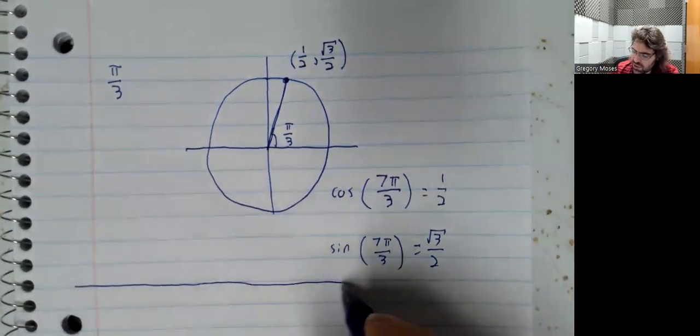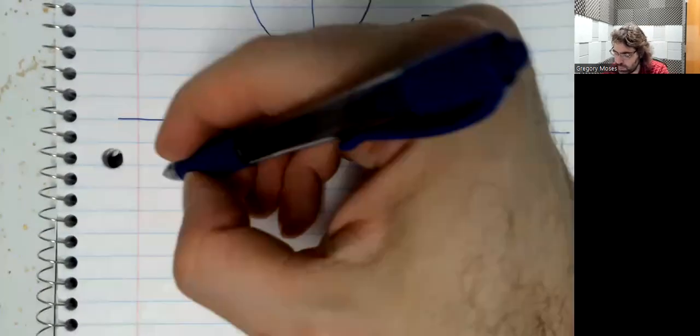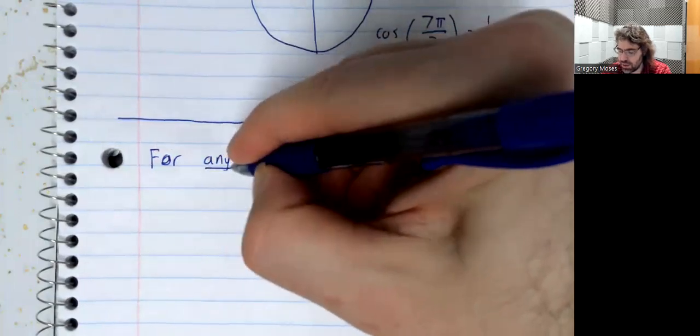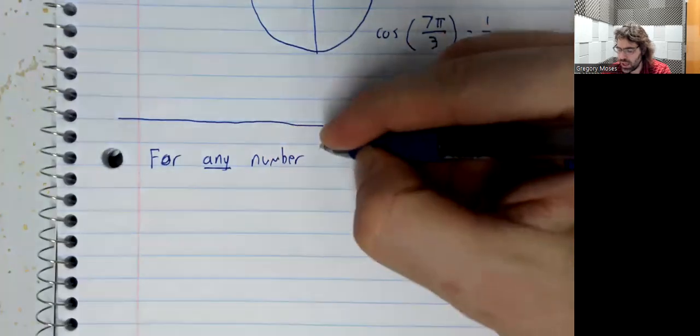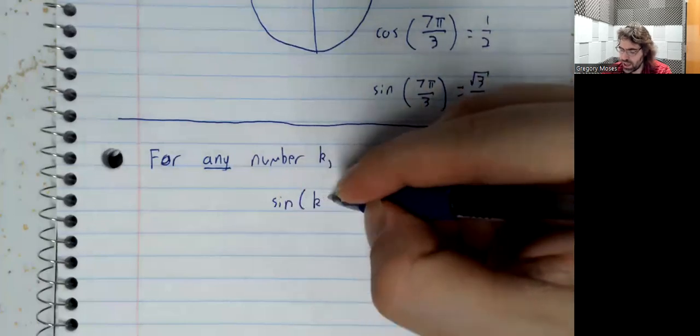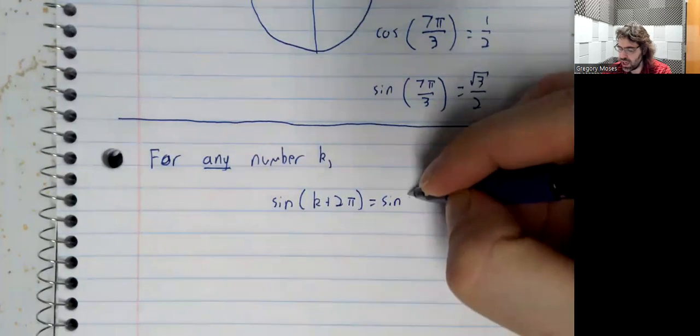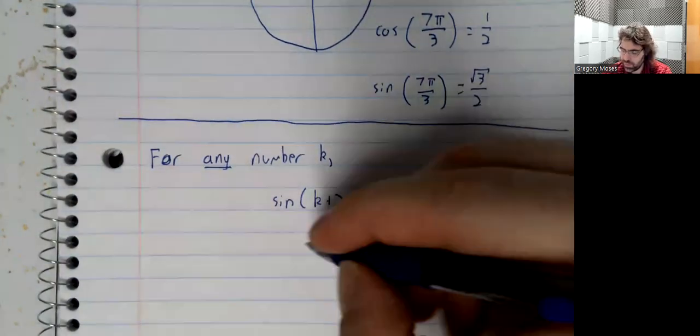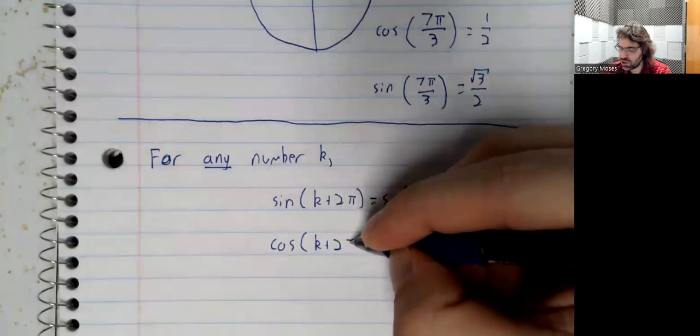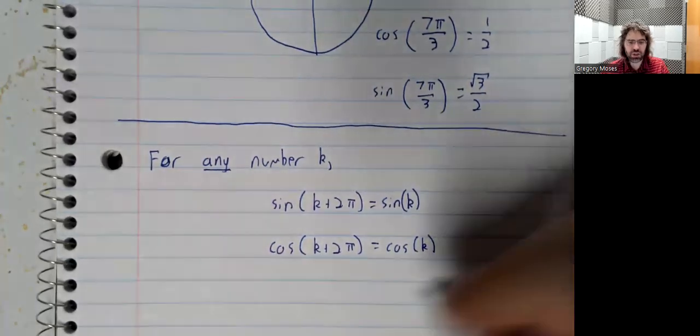And this right here is a special case of the following fundamental fact. For any number k, the sine of k plus 2 pi is the sine of k, and the cosine of k plus 2 pi is the cosine of k.